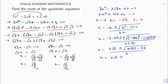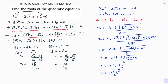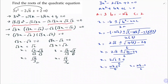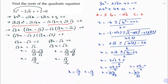So, x equals minus into minus plus 2√6, plus or minus under root: 2² is 4 and (√6)² is 6, so 4 times 6 is 24, minus 4 into 3 into 2 which is 24, all by 2 into 3 is 6. So, x equals 2√6 plus or minus √(24 - 24) by 6. Since 24 - 24 = 0, x equals 2√6 by 6. Simplifying — 2 over 6 reduces to 1 over 3 — so x equals √6 by 3. The roots are equal and both equal √6 by 3.